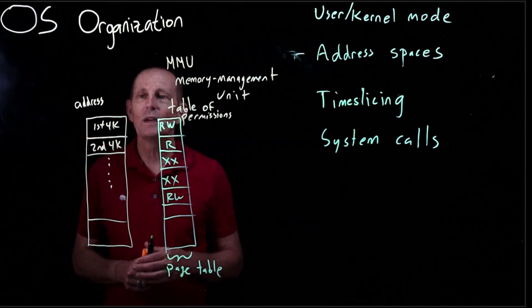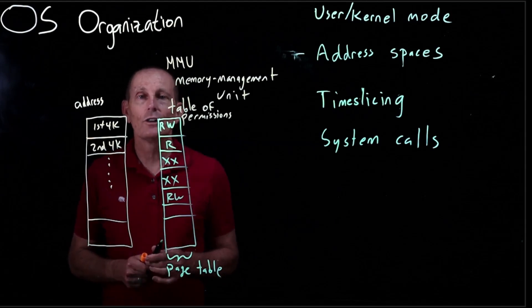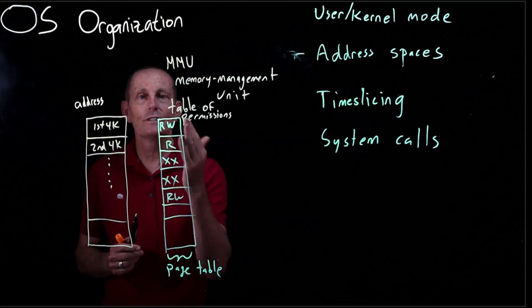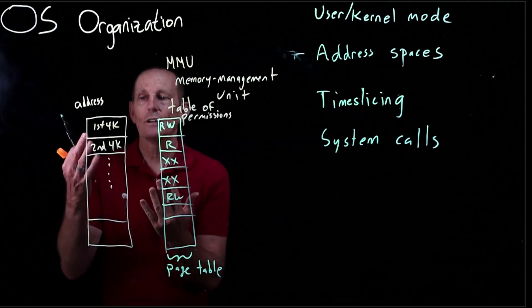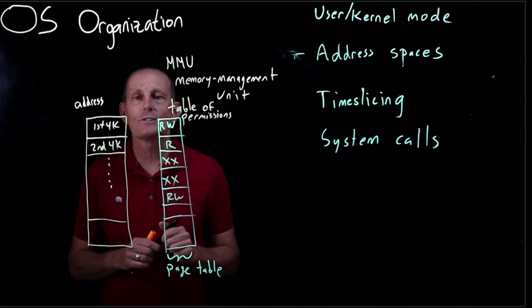And the key is the page table gets swapped out as we swap processes. So as we move from one process to another, the kernel will go ahead and change this page table, changing what view of the real memory the process has access to.